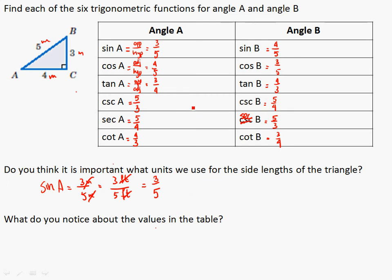What do you notice about the values in the table? The reciprocal relationship is one thing. Also notice that the sines and cosines — 3 over 5, 4 over 5 — are all less than 1. Will we ever get a sine larger than 1? No, because the hypotenuse is always the longest side. So if you're dividing by the hypotenuse, your sine and cosine will always be less than 1.